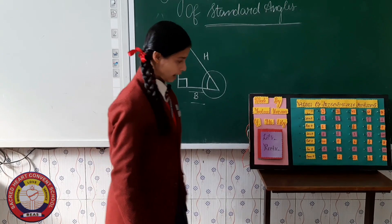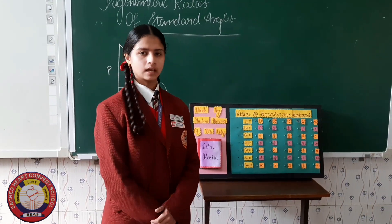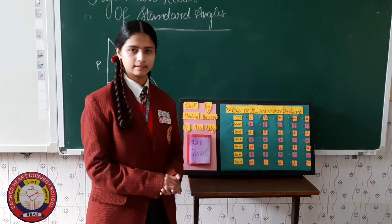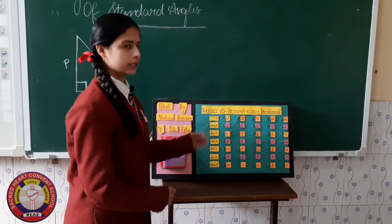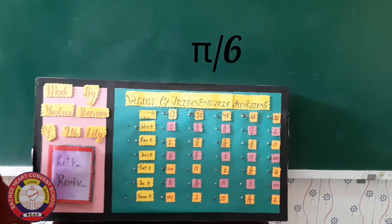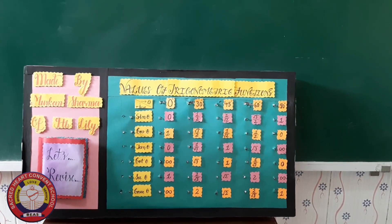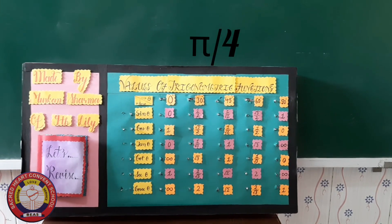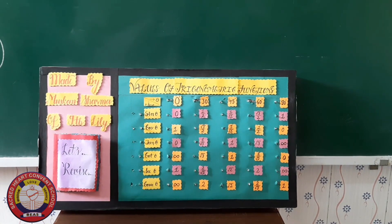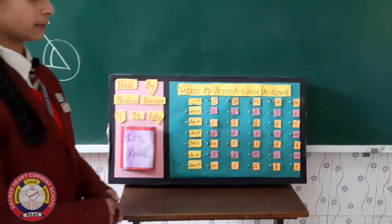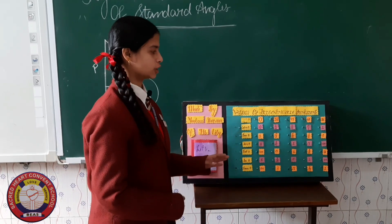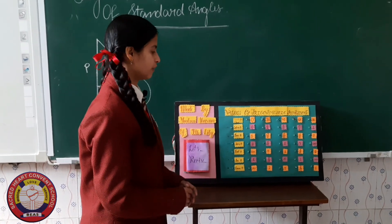For knowledge purposes, there is another unit called radian for measuring angles. In radians, the value of 0° is 0, 30° is π/6 radians, 45° is π/4 radians, 60° is π/3 radians, and 90° is π/2 radians. This concept is used in 11th class for finding angles.